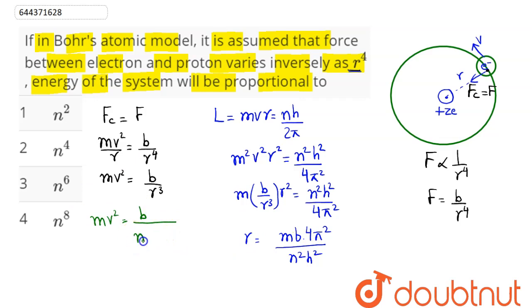So here this comes as m cube into b cube into 64 pi raised to power 6 into n power 6 into h raised to power 6.